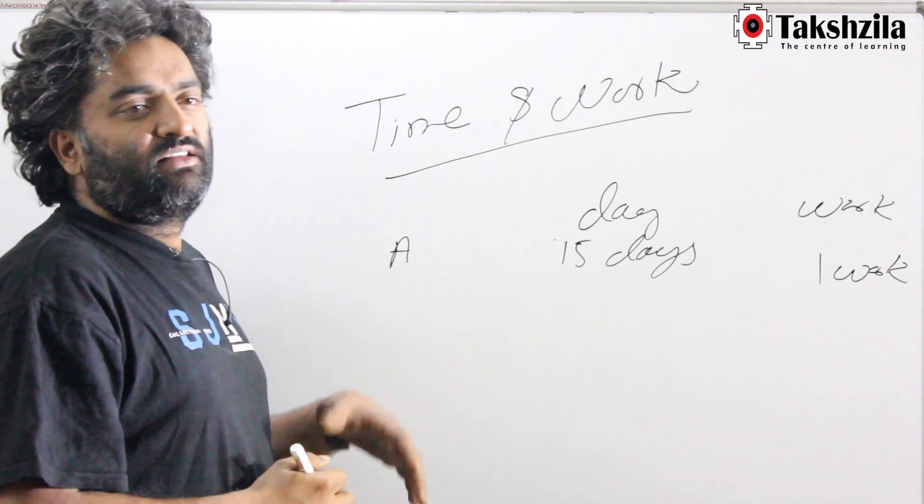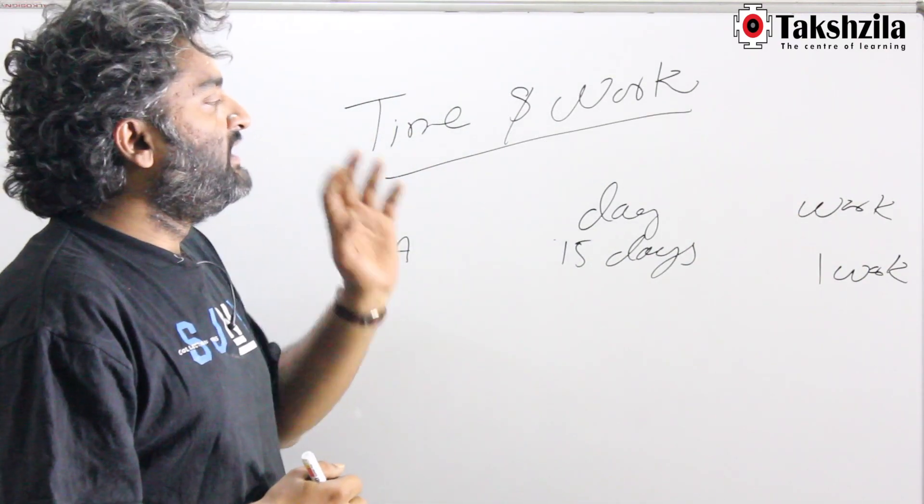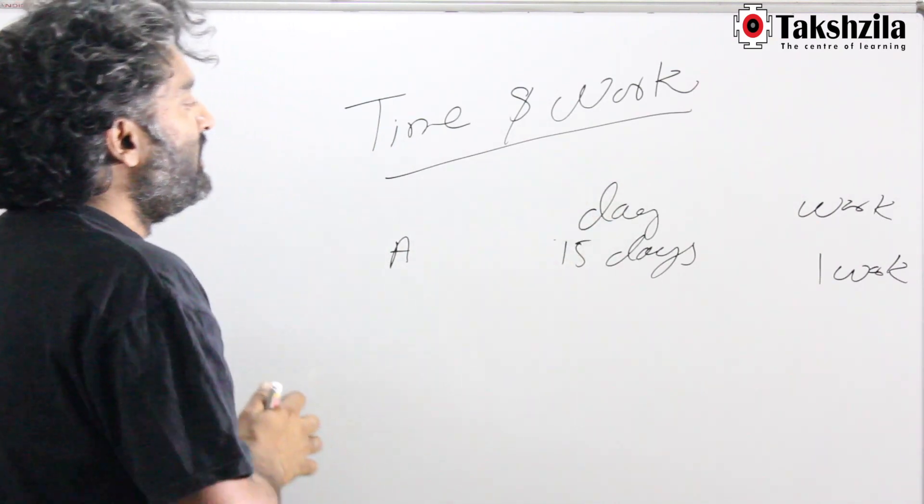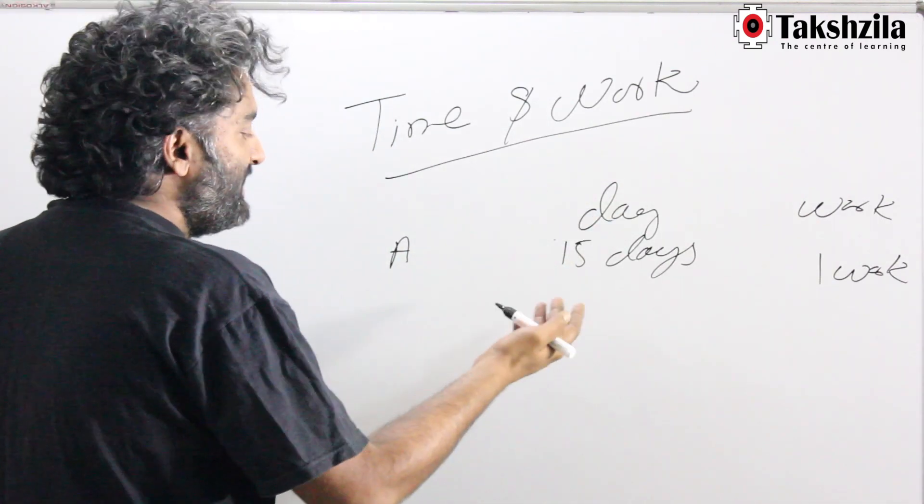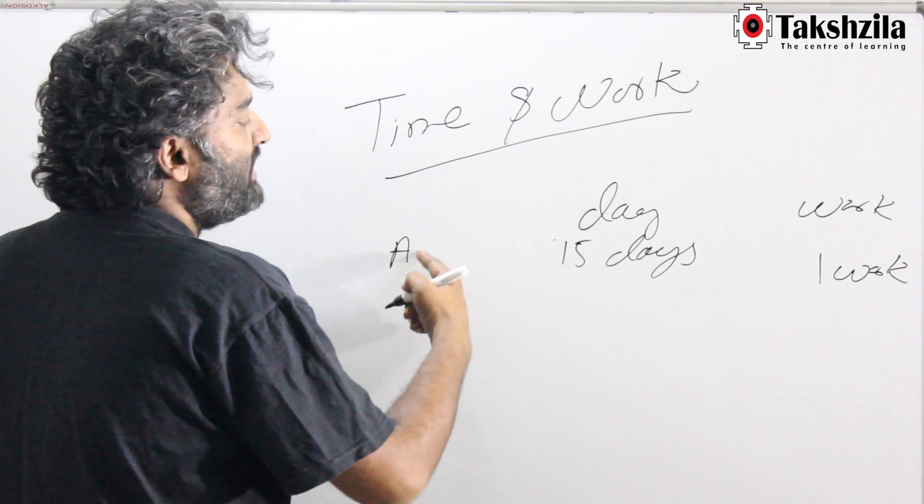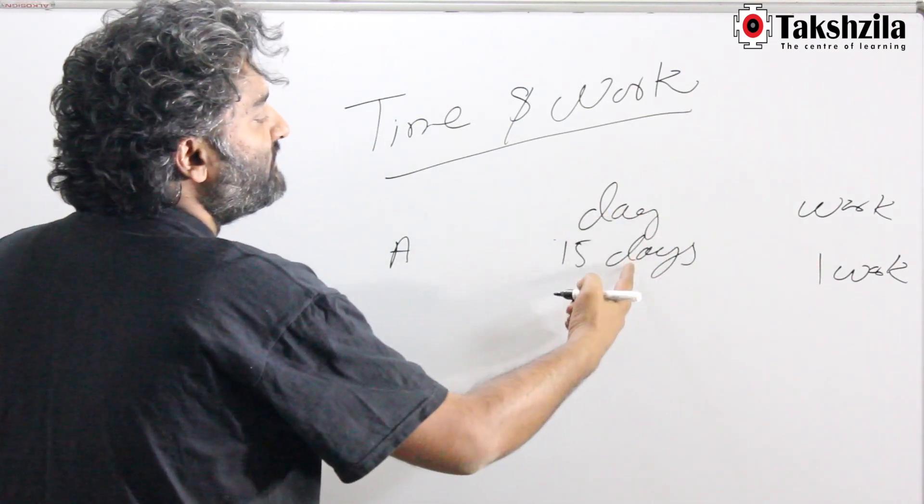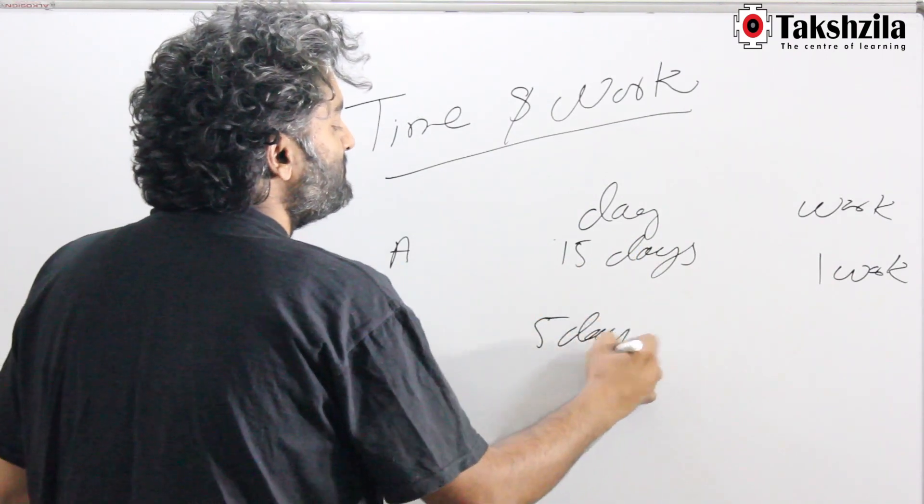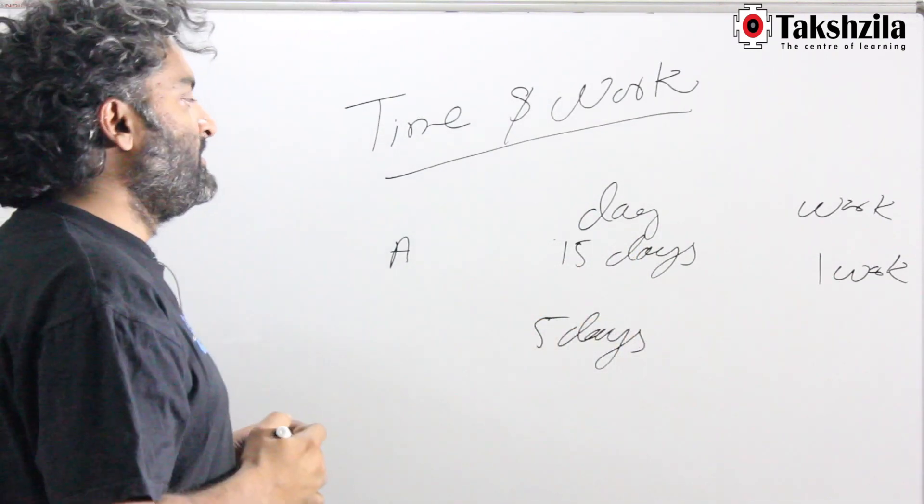We might have a problem with just this only. What do we mean by one work? This work could be anything - cutting of trees, painting of houses. All of that put together is considered one work. My first basic question would be, if A can do a piece of work in 15 days, how much of the work would he do in 5 days?